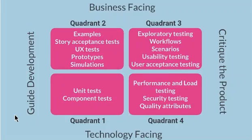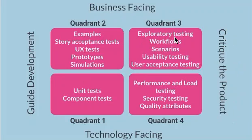On the left side is a guide for development. On this side is technology facing, which critiques the product — so UX and user interface testing comes here. On the other side is business facing. The quadrants are numbered: quadrant one, quadrant two, quadrant three, quadrant four.